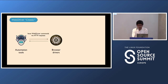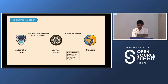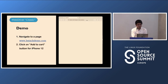How does WebDriver Classic work? We have our automation tools and our browser drivers. The automation tools issue commands to the browser drivers via HTTP request — that is the important point — and the browser drivers in turn control the browsers. These browser drivers are binaries which browser vendors maintain for their respective browsers. For example, Google maintains the Chrome driver for Chrome, and Mozilla maintains the GeckoDriver for Firefox.